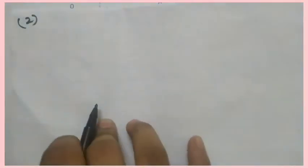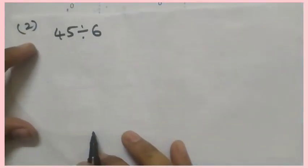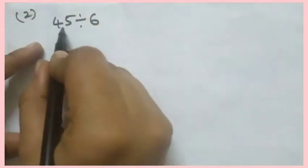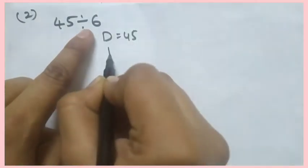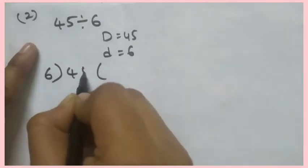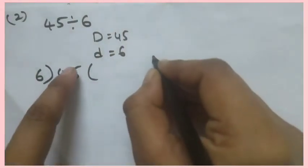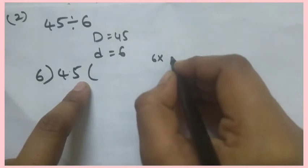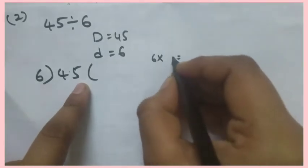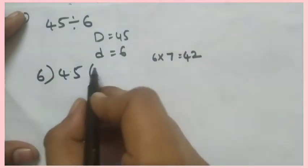I will explain one more example. 45 divided by 6. Here capital D is 45 and small d is 6. In the 6 times table we check: will we get 45? No. 44? No. 43? No. 42? Yes — 6 sevens are 42. So we write 7 as the quotient.